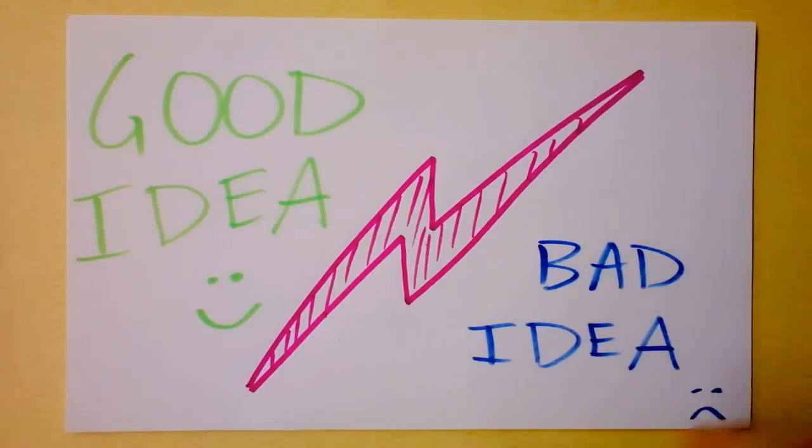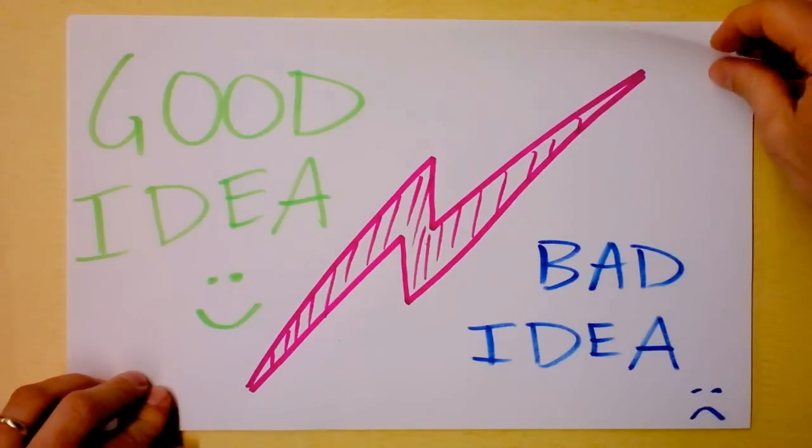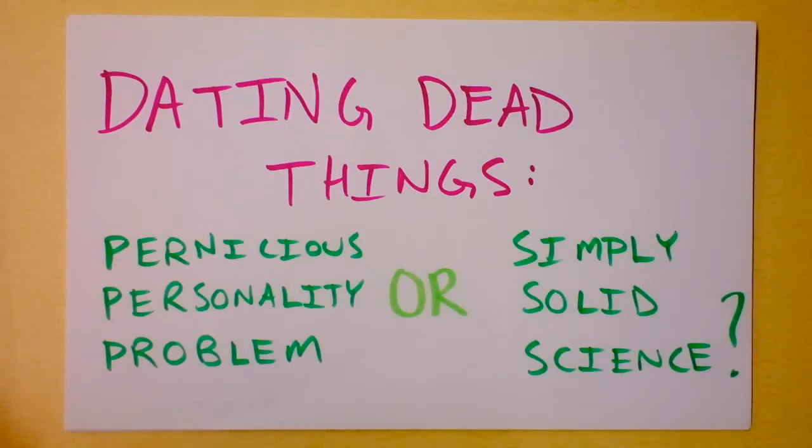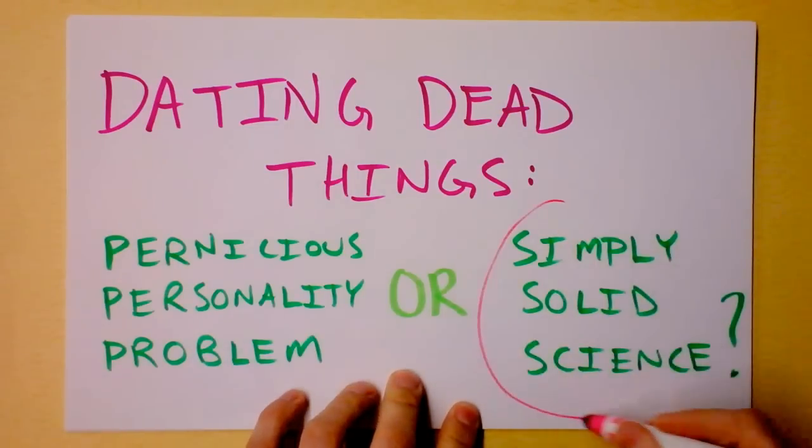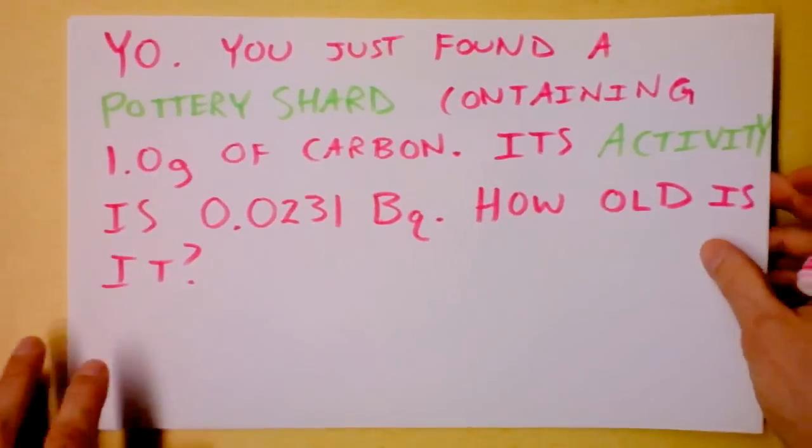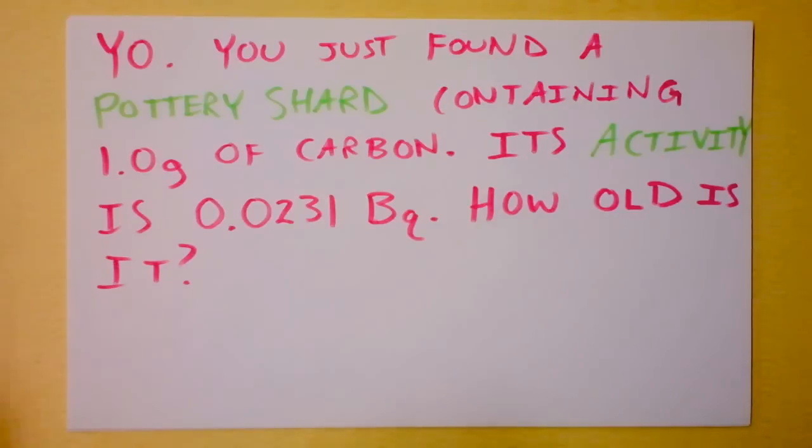Greetings and welcome back to another webisode of Good Idea, Bad Idea. Today we'll be investigating the question of dating dead things. Would you say that dating dead things is a pernicious personality problem or simply solid science? And our expert here today to tell you is Dr. Schuster, simply solid science. He says, here's the first question to investigate this issue. Yo, you just found a pottery shard and it contains one gram of carbon. Its activity is 0.0231 becquerels. How old is it? And you are about to find out because you are about to start dating dead things. So here we go.